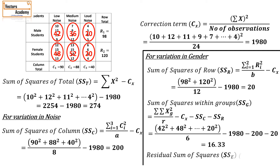Next is the residual sum of squares, which is important for finding the F-ratio. That is found by taking the sum of squares of total minus all the sum of squares which we have found out. That comes to 37.